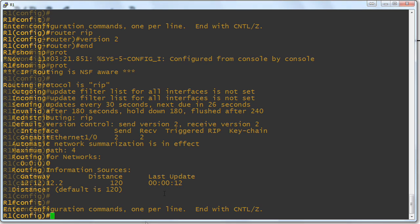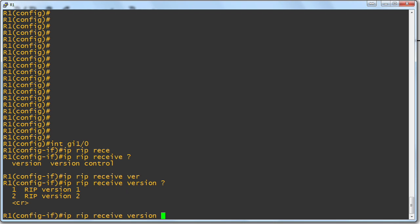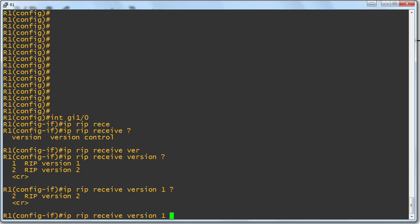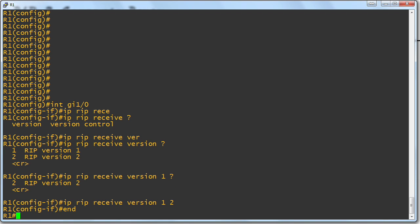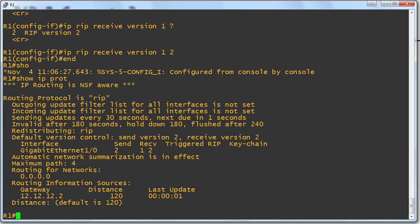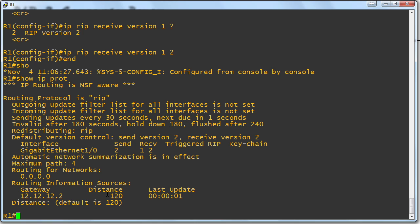Could we control this? Can this be controlled? I would think the answer is yes. Let's check it out. Interface gigabit 1 slash 0, IP RIP receive version, and then we get version 1 or version 2. Let's see if you can put both in there. Yeah, so you could say IP RIP receive version 1 and 2, and we'd confirm this, of course, with show IP protocols. And now we have configured what is the default for some systems: send version 2 now, receive version 1 or 2.